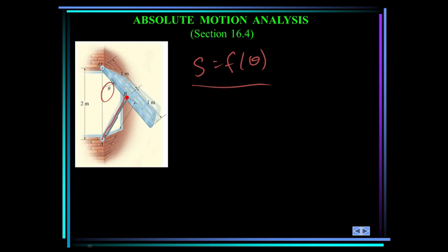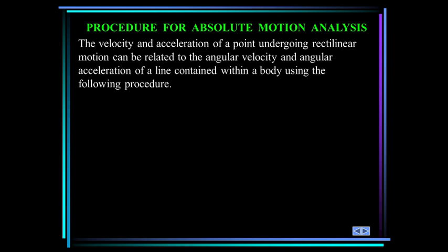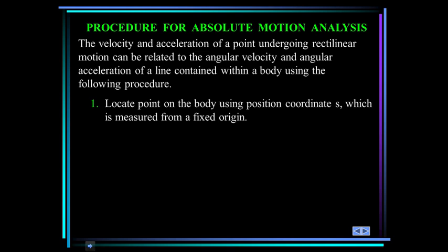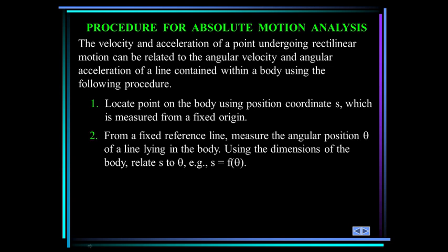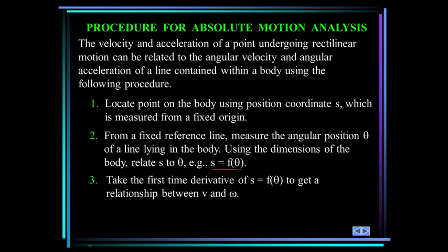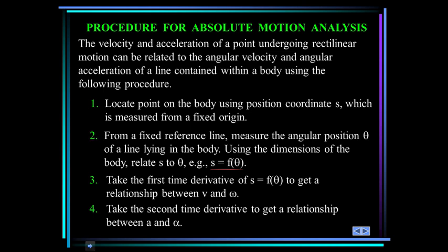Let's establish a procedure for analyzing motion. First, locate a point on the body using a position coordinate measured from a fixed origin. From a fixed reference line in the body, measure the angular position theta of a line lying inside that body. Using the dimensions of the body, relate s to theta — that is, get s as some function of theta. Then take the first time derivative of S to get velocity versus angular velocity, and the second time derivative to get acceleration versus angular acceleration.